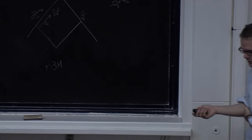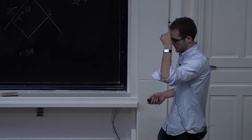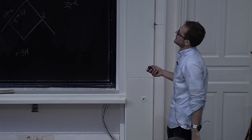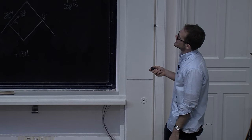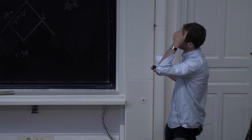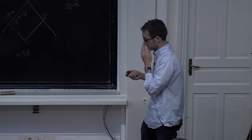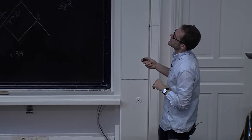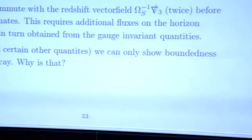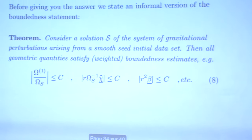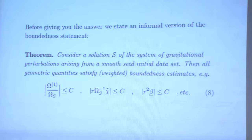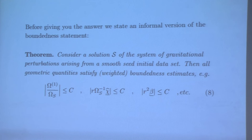That ends the main part of the talk — somehow in this room things happen slower than they should. I came prepared with a little epilogue. I wanted to make the connection with the first talk in the conference by Bob Wald. If you stare long enough at the system of gravitational perturbations I've shown you, you discover that there exist conservation laws within the system, very much like the ones Bob told us about. I phrased them in terms of the linearized connection coefficients.